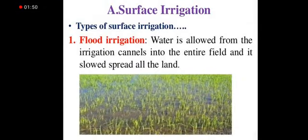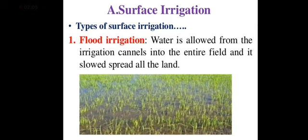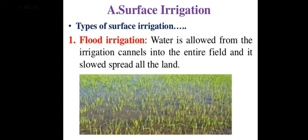In surface irrigation, we have flood irrigation, which is subdivided into wild flooding and controlled flooding. Here we are going to see about controlled flooding. Water is allowed from the irrigation canal into the entire field and it slowly spreads all over the land. When the water is free to move in the land and occupies the entire area, that type of irrigation is called flood irrigation. As we can see in the picture, there is a crop sown and the water is flooded in the entire field.